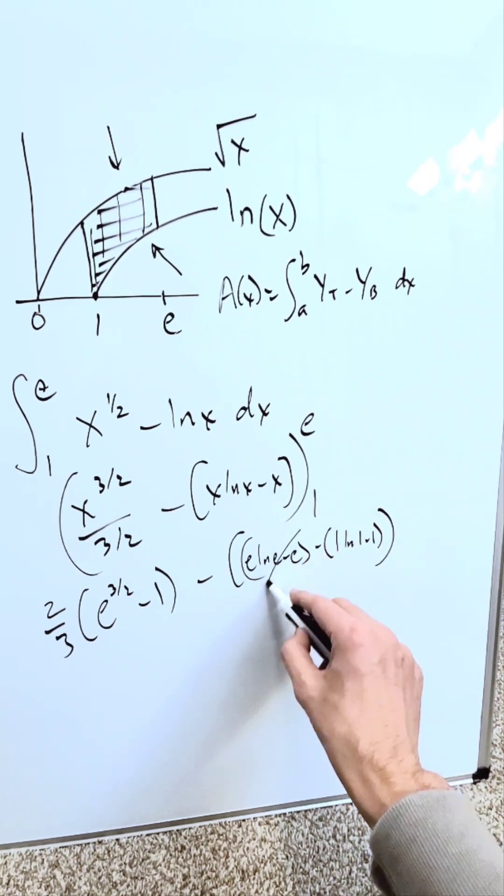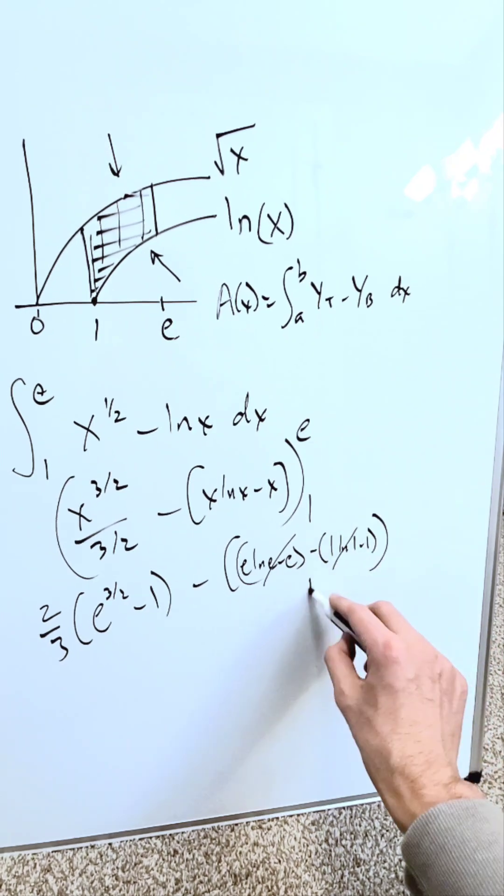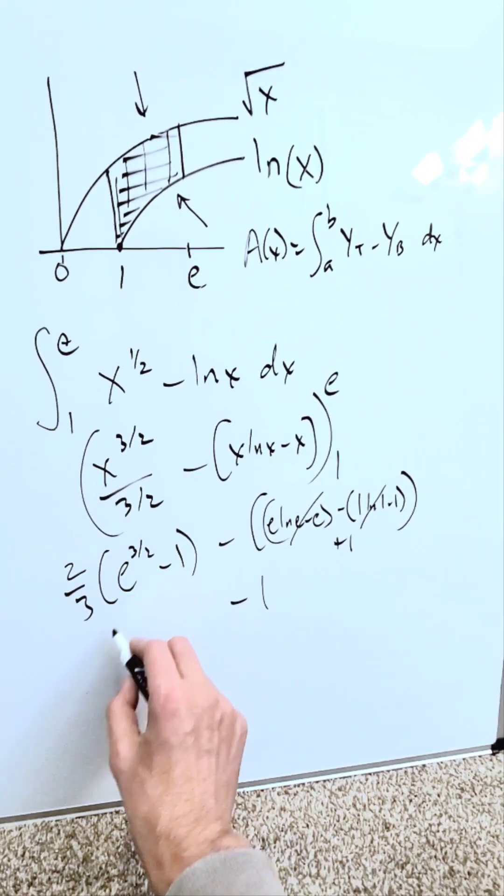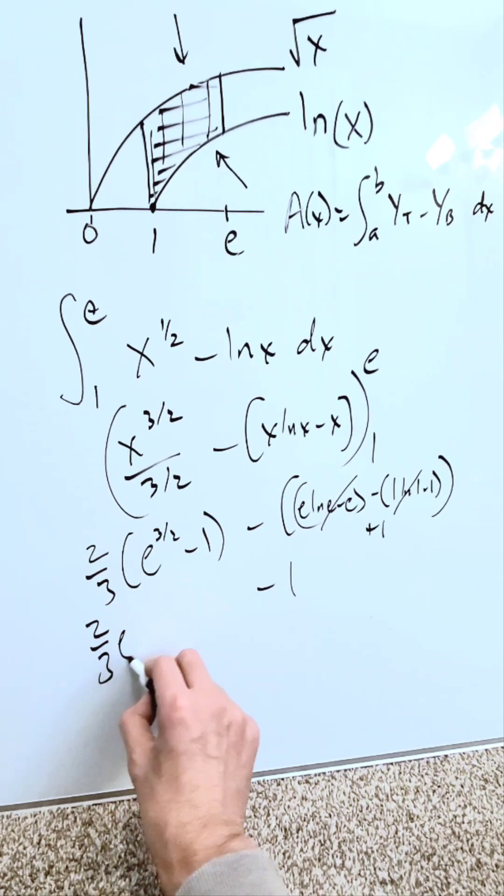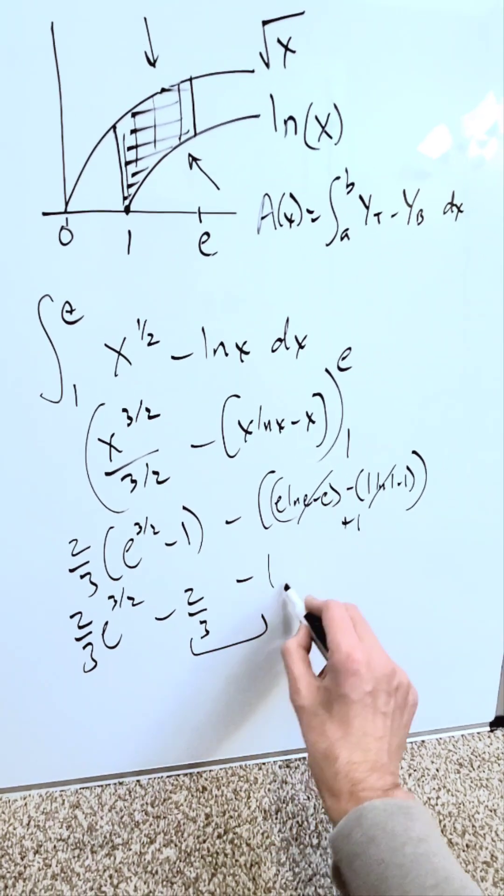Compute this. e minus e, that zero is out. Natural log 1 is zero, out. I only have a minus and a minus 1, which is a positive 1. That's impacted by this minus, so I'll have minus 1. Open this up: I'll have 2 over 3 e to the power of 3 over 2 minus 2 over 3. You can combine these.